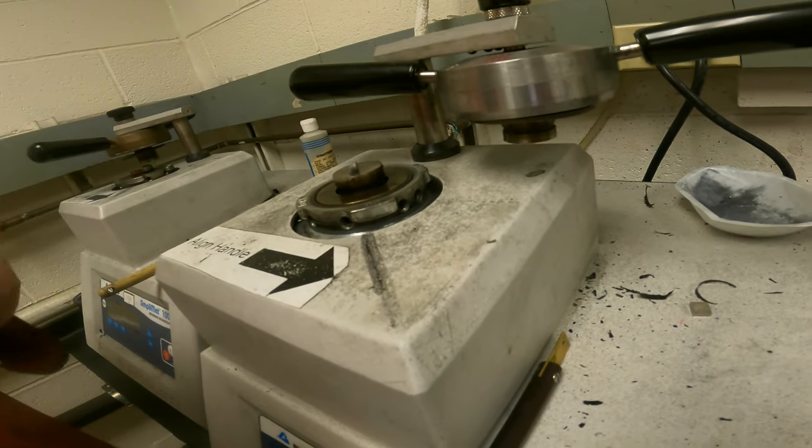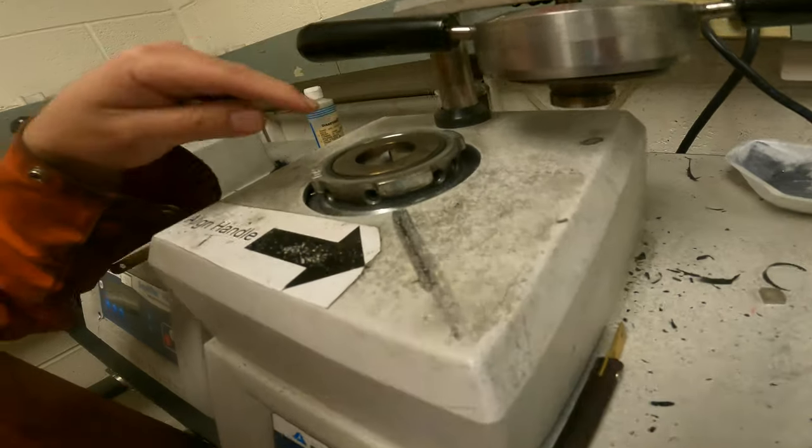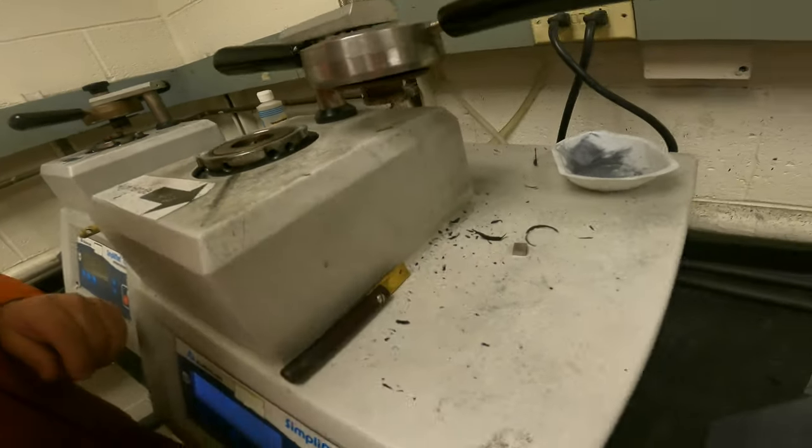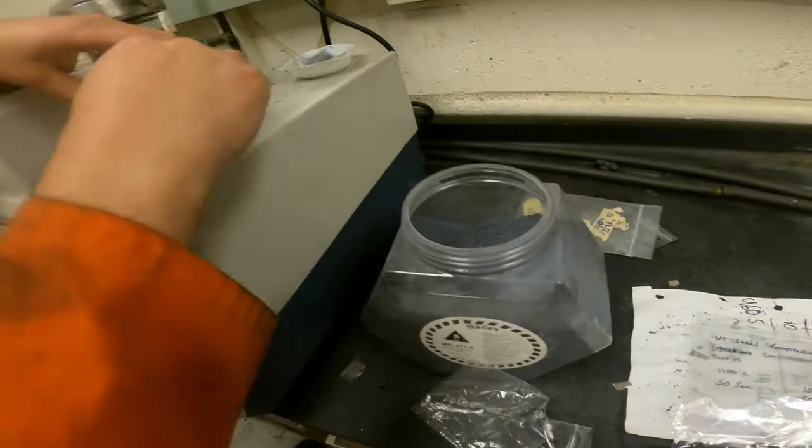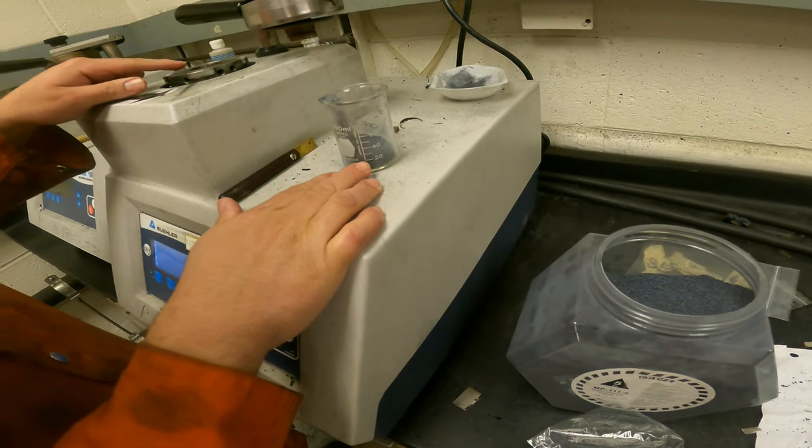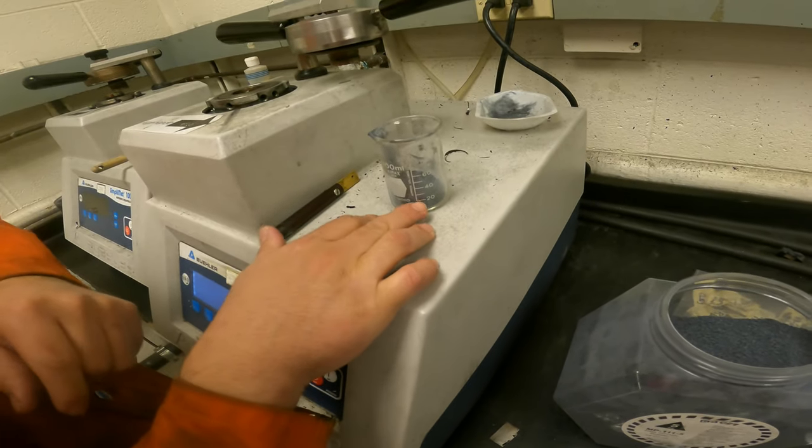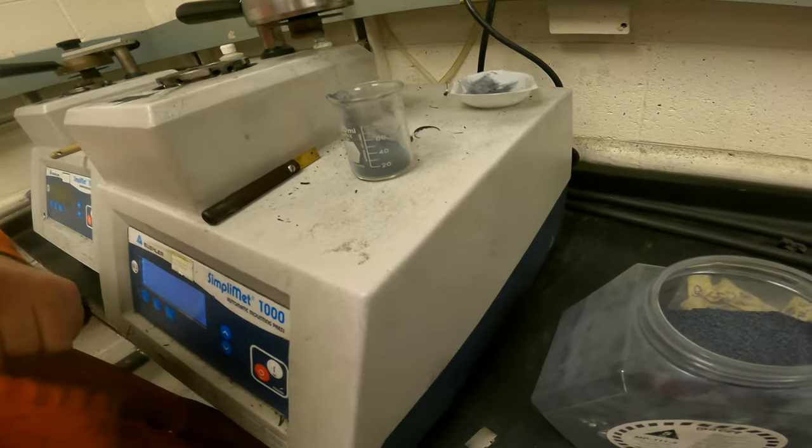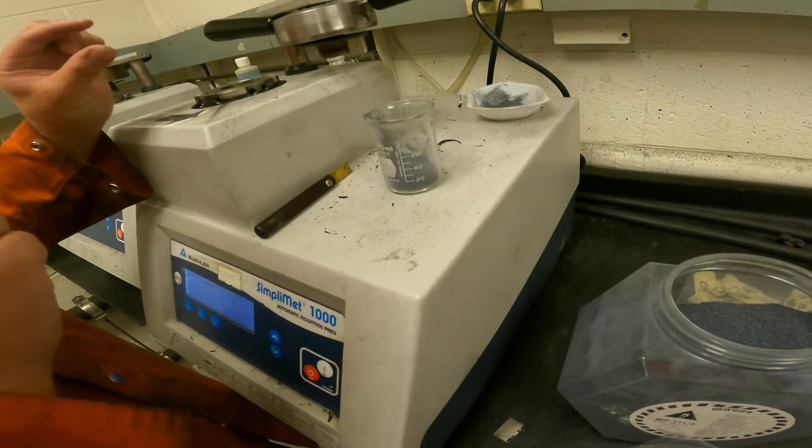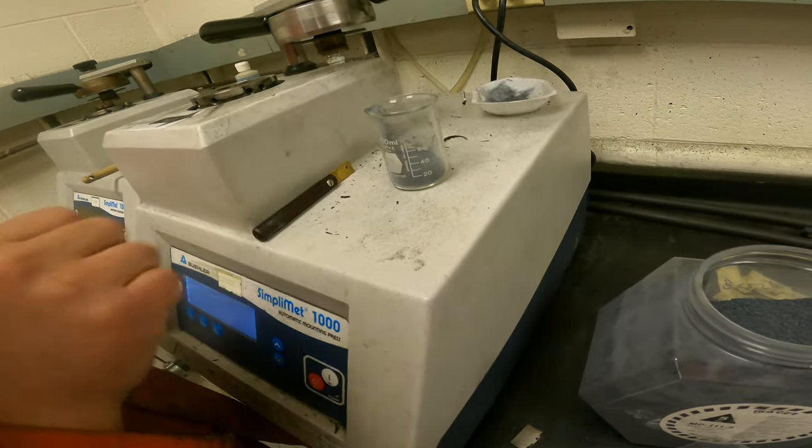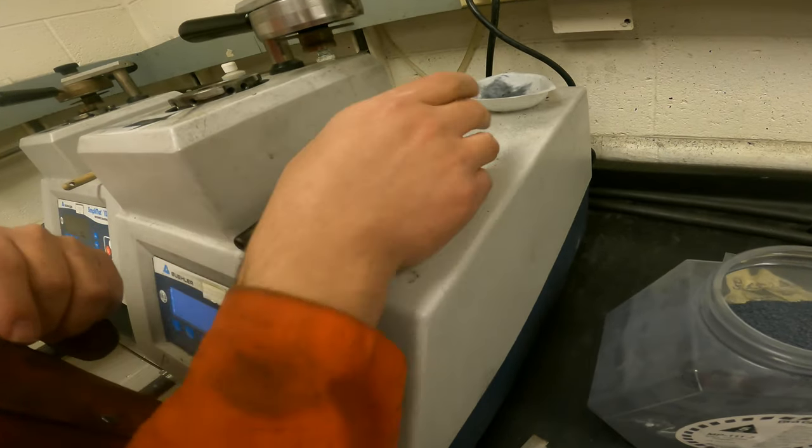So I place my sample and start to lower the ramp, so the sample starts to go down. Now I'm going to prepare my powders. Depending on the experience, usually for big samples I use 20 milliliters of the resin. In this case, because the sample is tiny, we're going to use 30 or 35. It doesn't need to be exact.